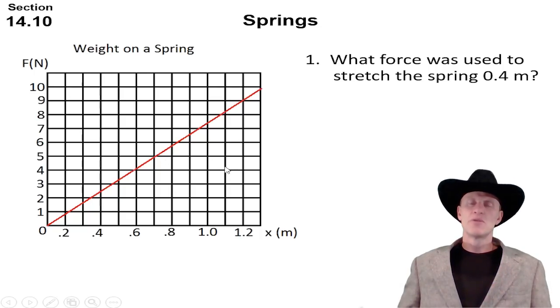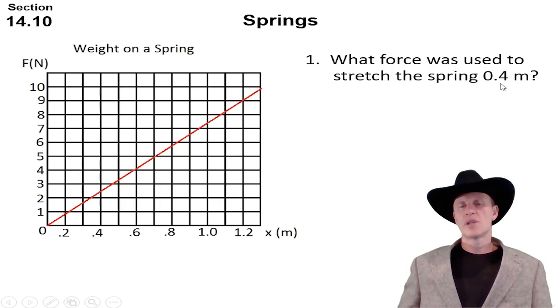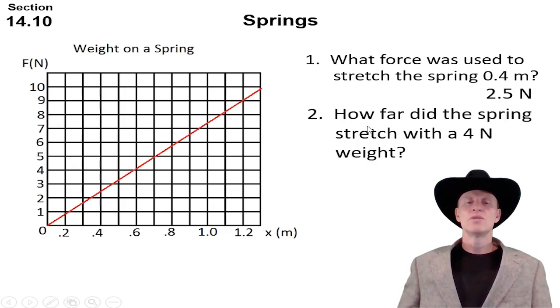So what force was used to stretch the spring 0.4 meters? Well, meters is down here on a horizontal axis, so 0.4 goes straight up, looks like two and a half newtons. We can also answer questions like how far did the spring stretch with a four newton weight? Well, newtons are on the vertical, so we got to go up to four, go over to the graph, it's right before the 0.6, we can go 0.58 meters.